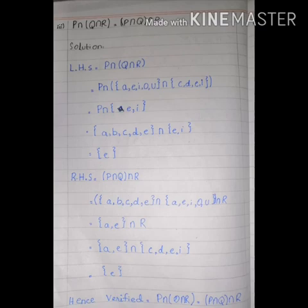Now we solve the right-hand side: (P intersection Q) intersection R. First we solve the bracket: P intersection Q. P set is A, B, C, D, E and Q set is A, E, I, O, U. The common elements in both sets are A and E, so P intersection Q equals {A, E}.